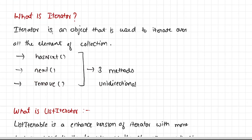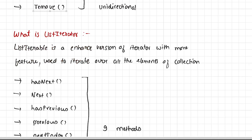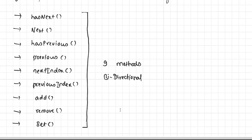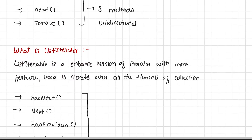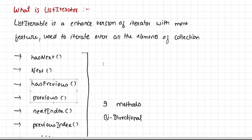What is list iterator? List iterator is an enhanced version of iterator with more features, and it is also used to iterate over all the elements of a collection. Iterator has only three methods, but list iterator has nine methods: hasNext, next, hasPrevious, previous, nextIndex, previousIndex, add, remove, and set. List iterator is bidirectional, so we can move forward as well as backward using methods like hasPrevious and previous. The key difference is that list iterator is an enhanced version of iterator, and both are used to traverse the collection.